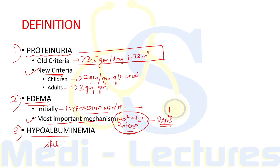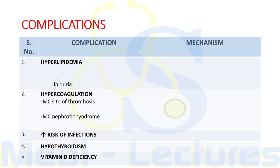The third finding is hypoalbuminemia, in which serum albumin should be less than or equal to 2.5 grams per deciliter. The normal value of serum albumin is 3.5 to 5.5 grams per deciliter. If it is less than or equal to 2.5, we say hypoalbuminemia. Now we will discuss the complications that can occur in a patient with nephrotic syndrome.